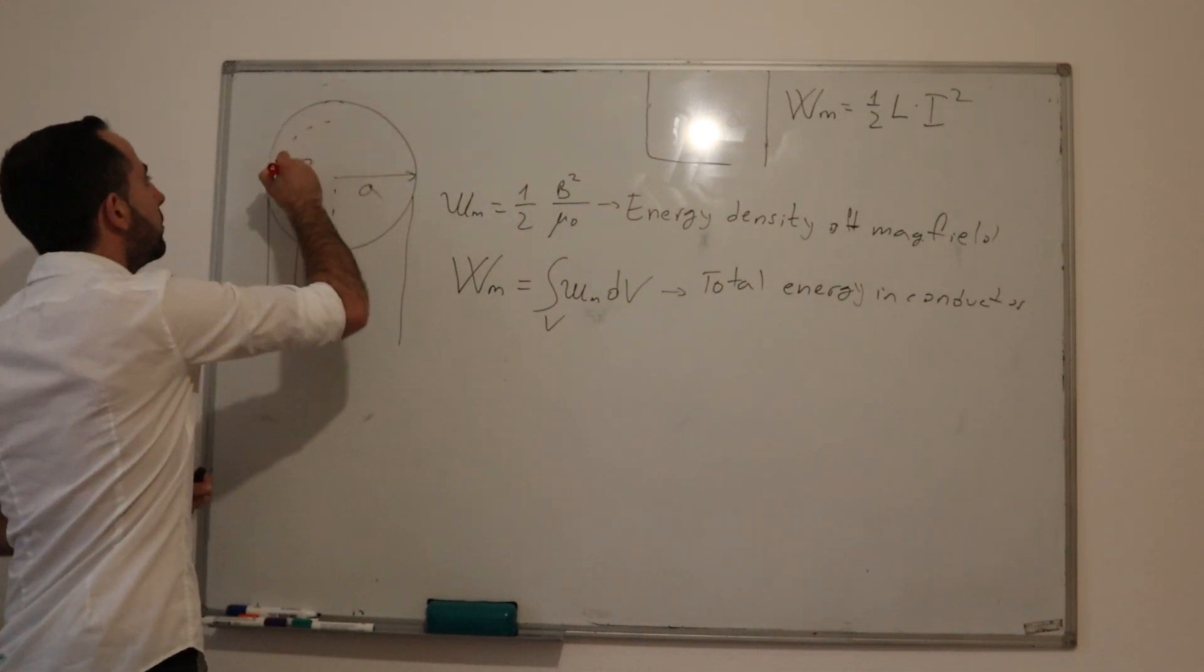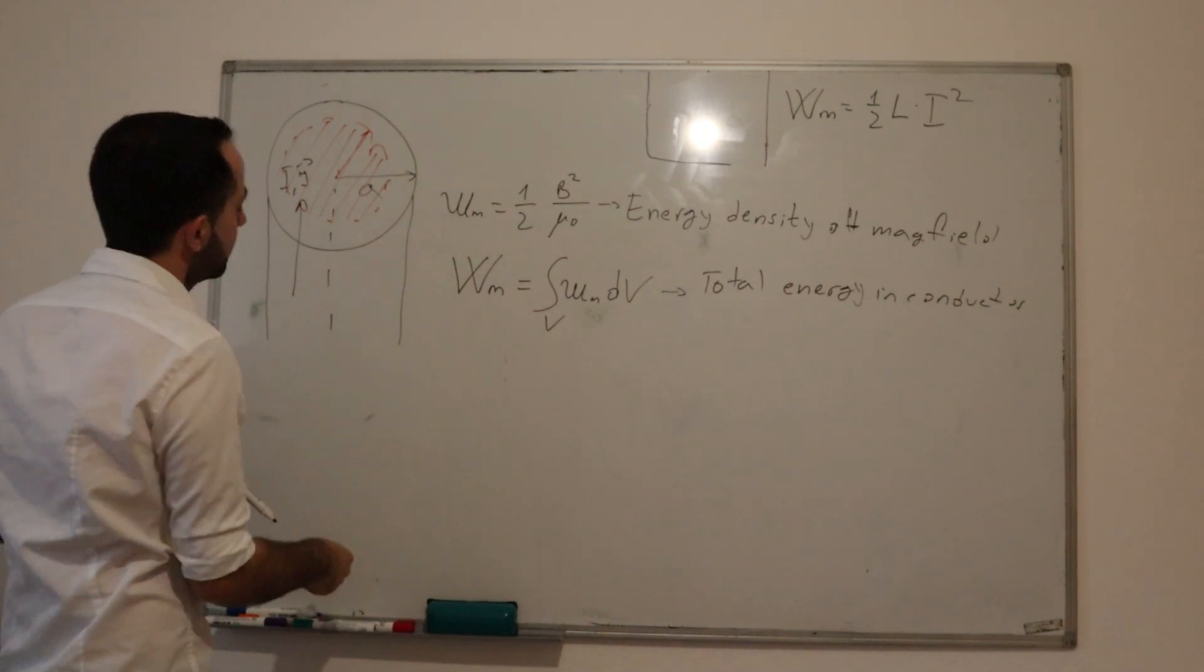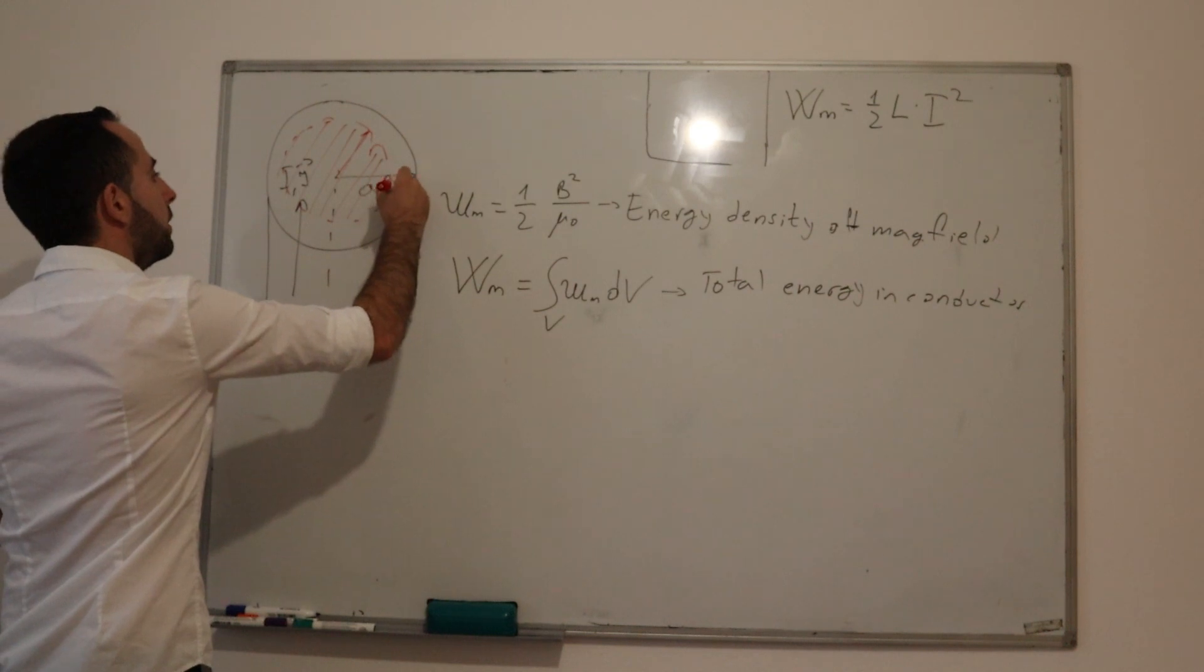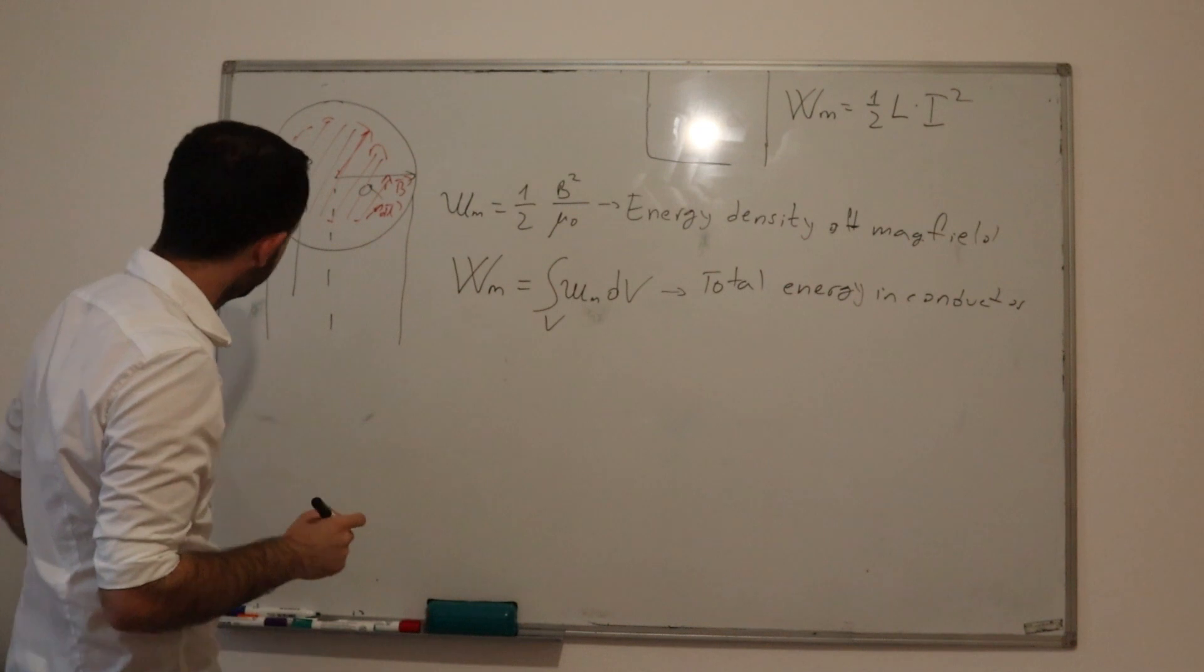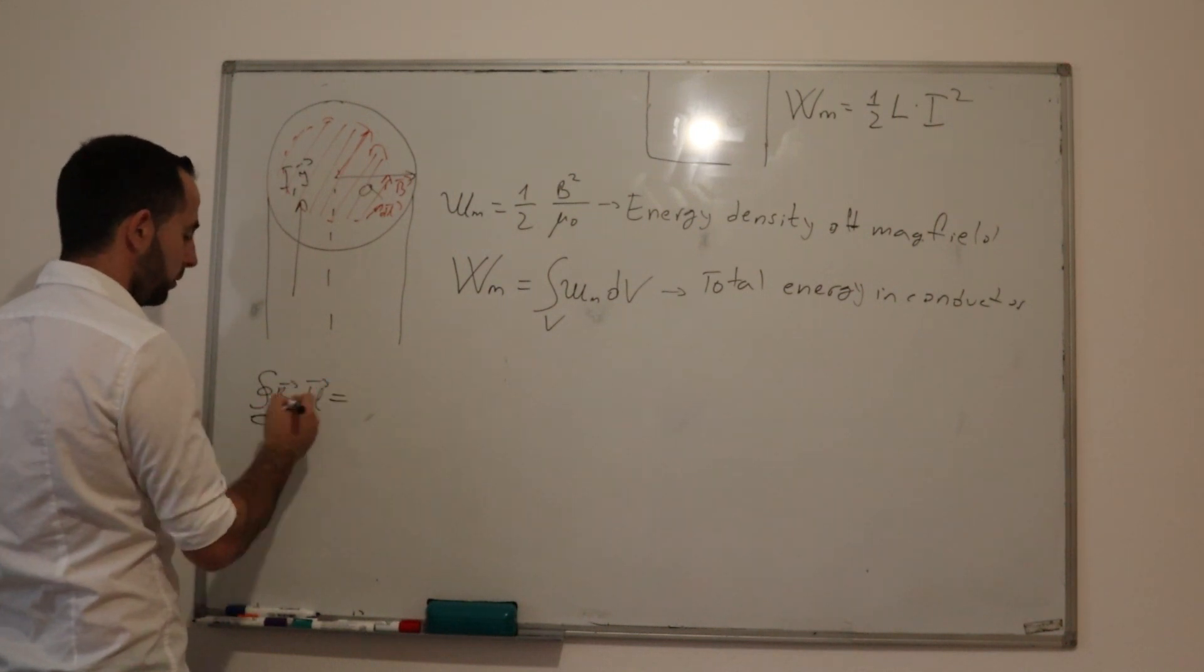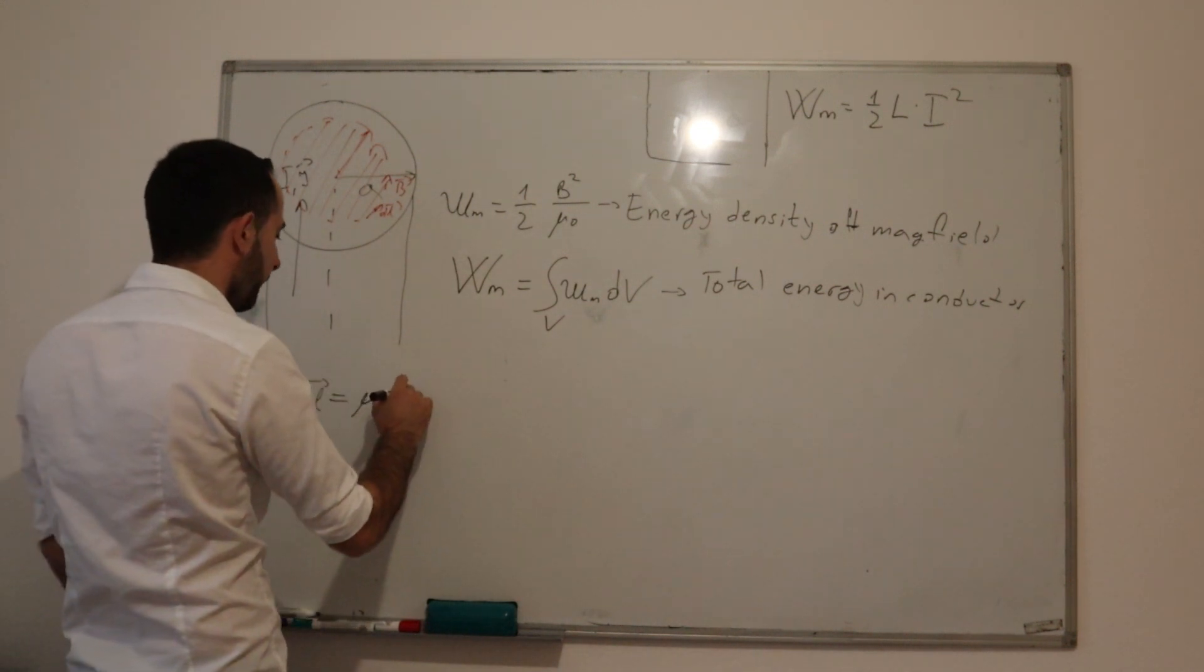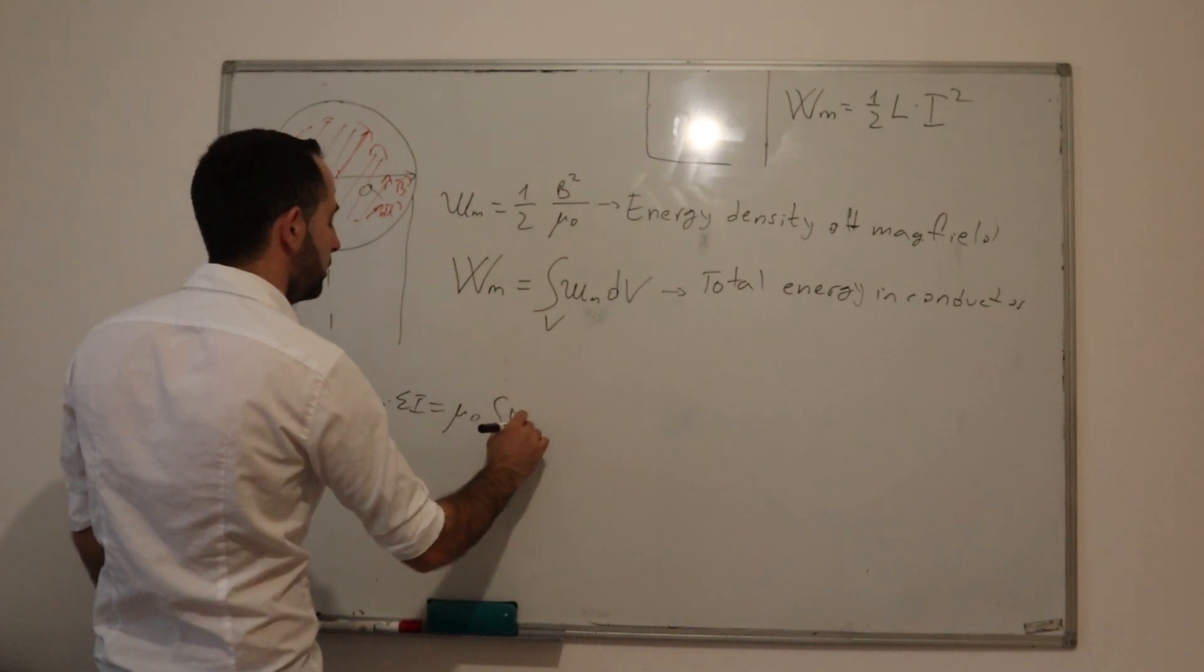First, we will close our contour with radius R, and this is our surface. This is the magnetic field, B and DL. So we get that integral B·DL over closed contour C is equal to μ₀ times sum of I, or μ₀ times integral J·dS.